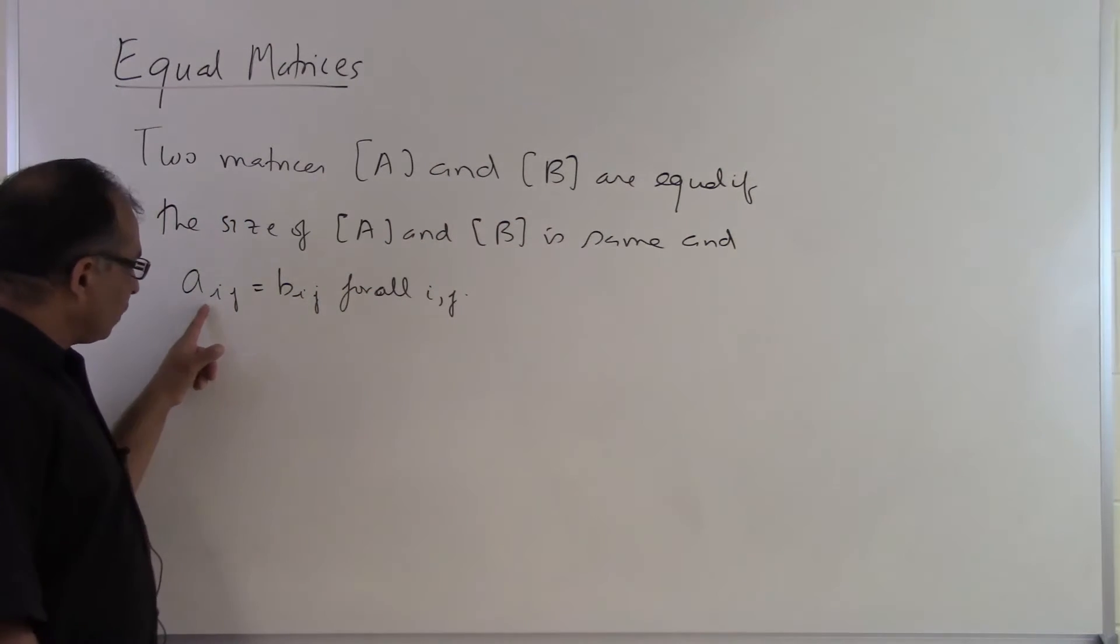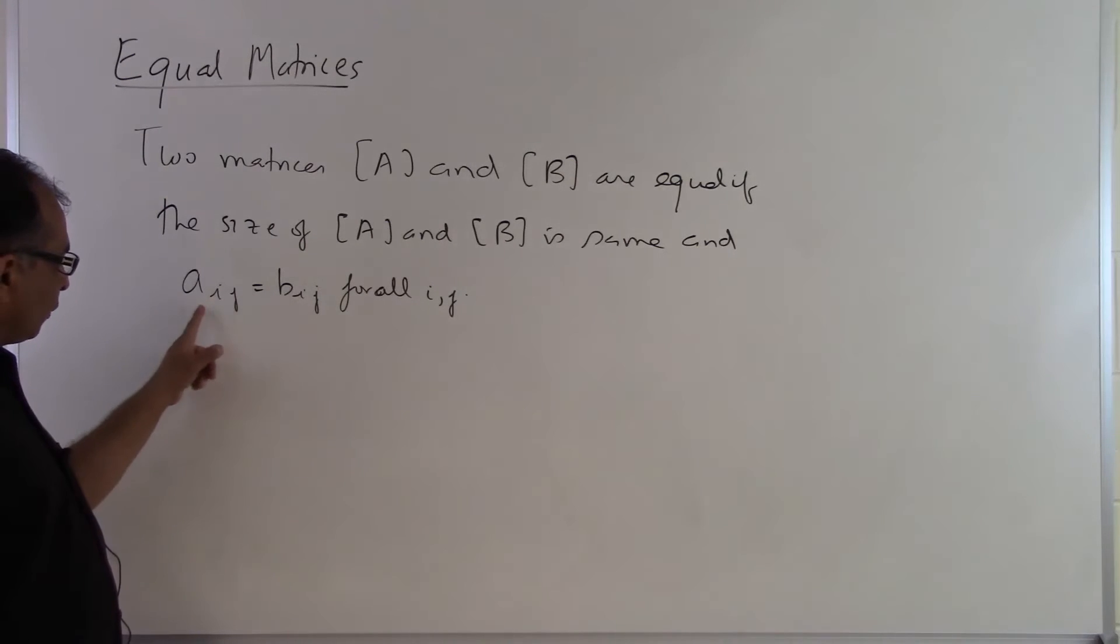And then all the elements have to be equal so far as the corresponding element is concerned. So the ith row jth column has to be same as the ith row jth column of B as well as in A.